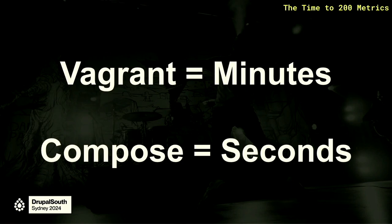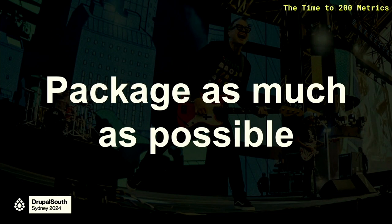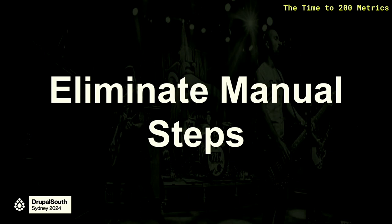When you multiply that by the amount of times you need to down, up, and rebuild the environment, it really adds up. Vagrant for us was minutes, potentially hours depending on the client — database size is another factor. Compose really boiled down to two seconds, especially if things were cached. So through this journey: package as much as possible. Instead of a lot of automation triggering when you up an environment, the more you can front-load into a pipeline and come out with an artifact, the less development teams need to pay for that exponentially.